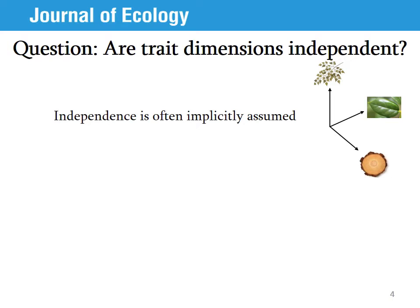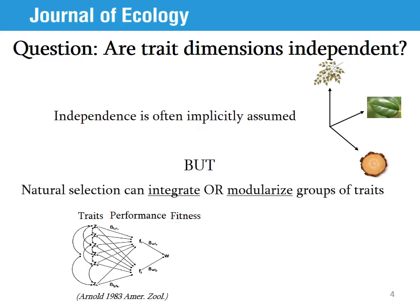However, we still don't know if these dimensions are independent from each other. We often implicitly assume that dimensions are independent because we tend to measure a single trait to reflect the whole dimension. For example, we'll measure leaf mass per area to reflect the leaf economic spectrum, leaf area to reflect Corner's Rule, and wood density to reflect the wood spectrum. However, this approach is only valid if those traits are completely independent from each other.